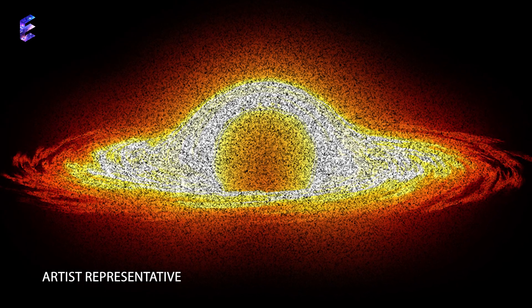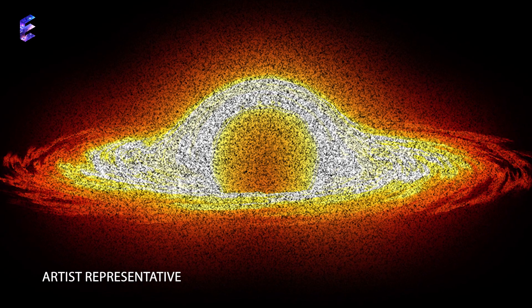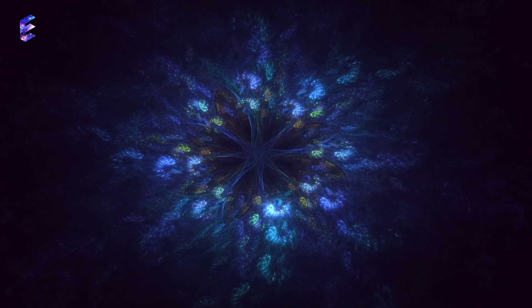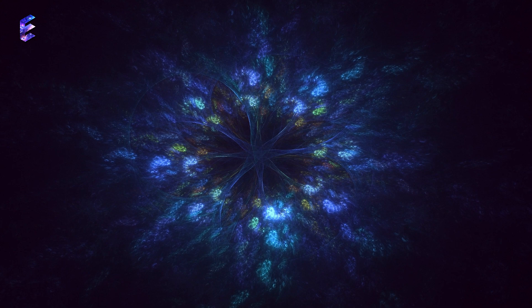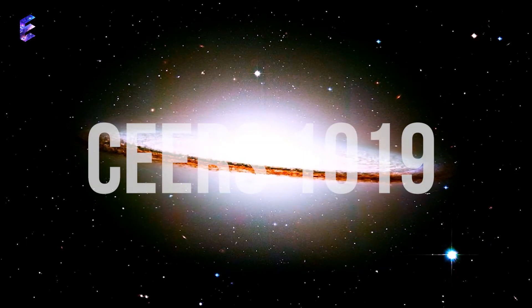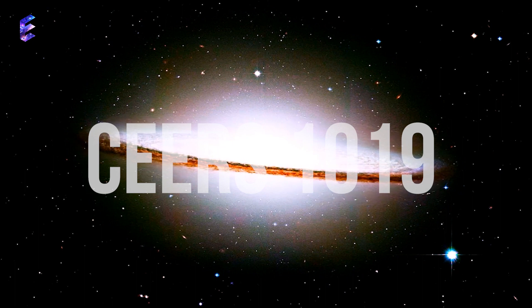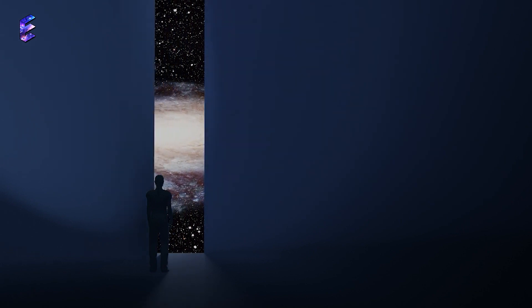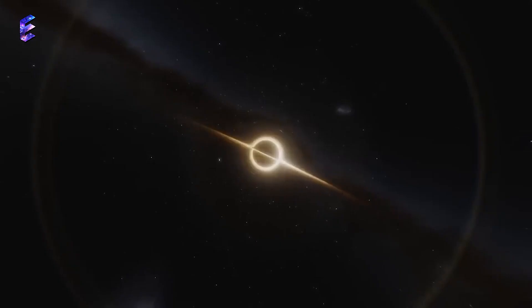The black hole was found inside one of the earliest galaxies ever detected, previously known as EGSY-8, though since renamed CEERS-1019. Its discovery could help with one of the biggest head-scratchers of the early universe: how the black holes in the cosmic dawn grew to such large size in such a short amount of time.